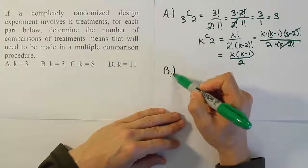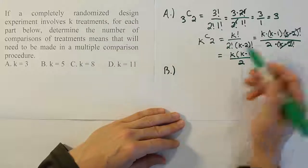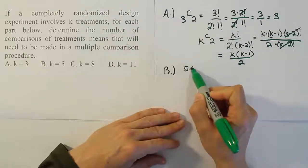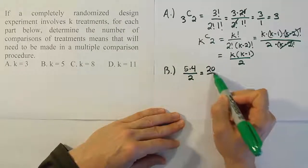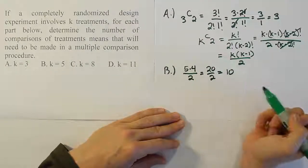For part B, we'll use this simplified formula. We have 5 times 4 over 2. 5 times 4 is 20, over 2 gives us 10 as the answer.